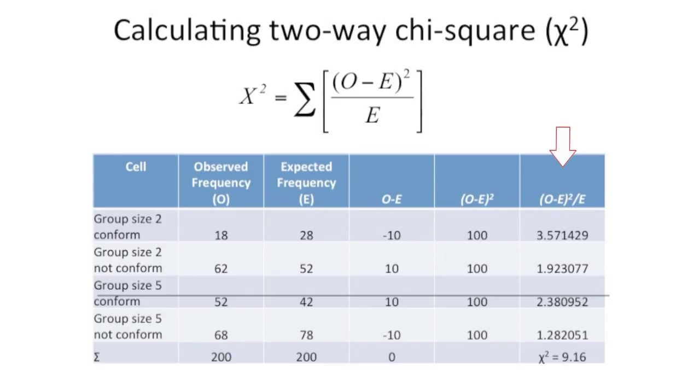So in the last column, we take the O minus E squared and divide it by E and sum it across all of them to give us our value of chi-squared, which in this case is 9.16.